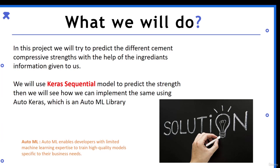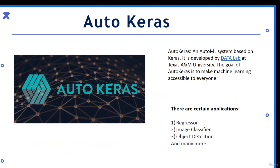Auto machine learning enables developers with limited machine learning expertise to train high-quality models specific to their business needs. It automates the whole model development process. AutoKeras is an AutoML system based on Keras, developed by the Data Lab at Texas A&M University. Its goal is to make machine learning accessible to everyone, with applications including regression, image classification, and object detection.